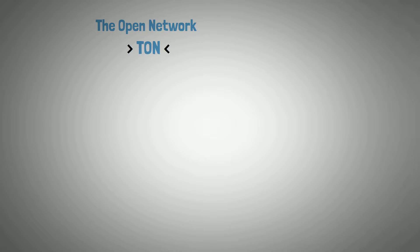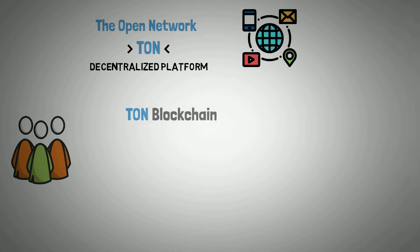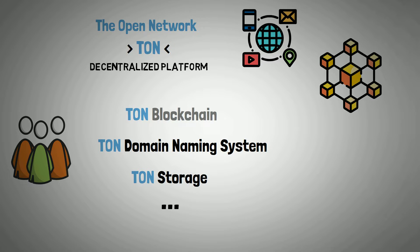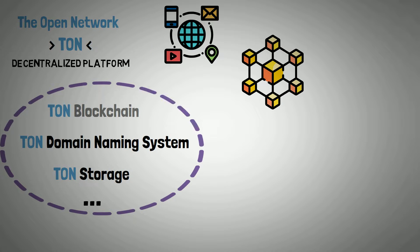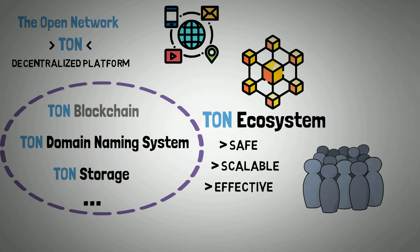The Open Network, also referred to as TAN, is fundamentally altering how we perceive the Internet. It is a decentralized platform where users can use TAN blockchain, TAN domain naming system, TAN storage, and other components instead of just one blockchain. They combine to create the TAN ecosystem — a safe, scalable, and effective network of millions of users is what the blockchain aims to achieve.